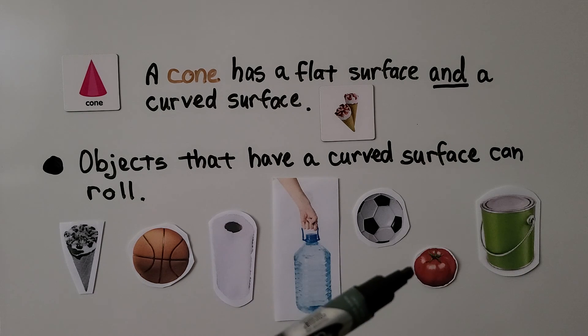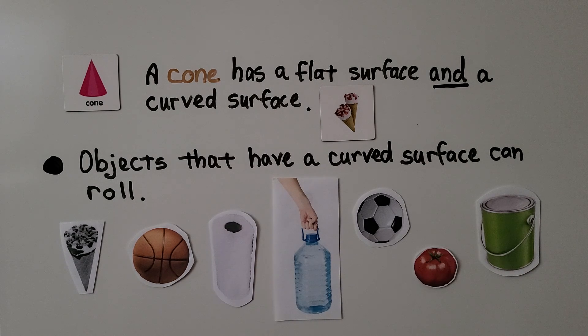Same with the soccer ball, or a tomato, or a can of paint. We can roll them so they have curved surfaces.